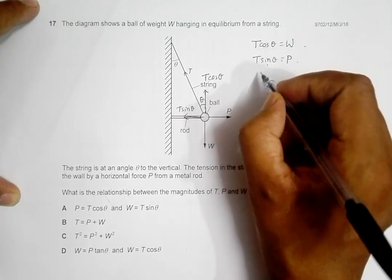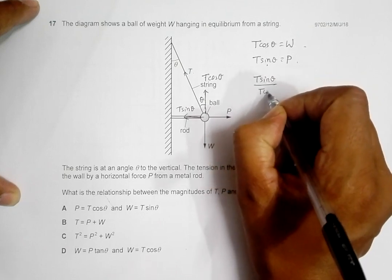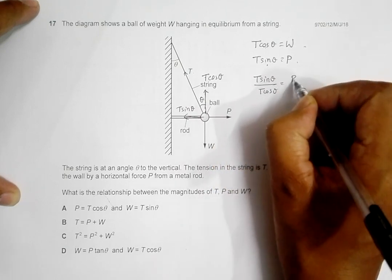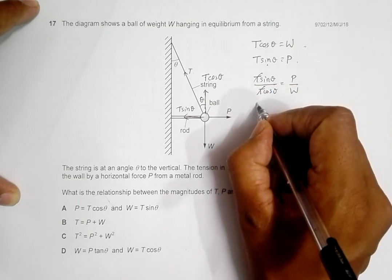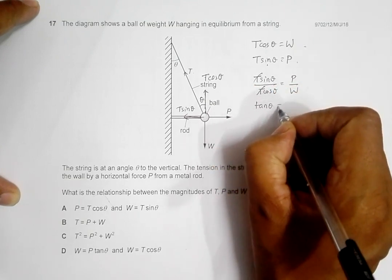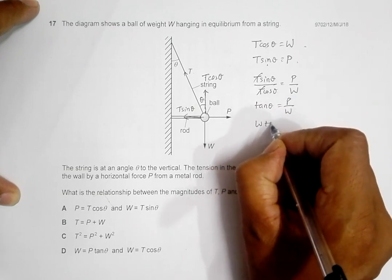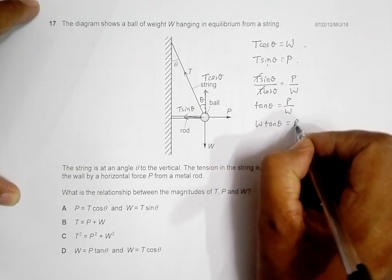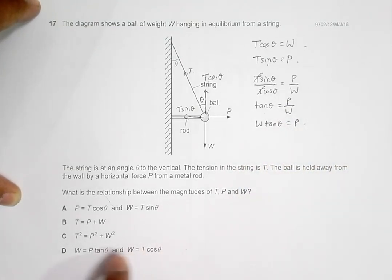If I divide this equation by this, I will have T sin theta by T cos theta equals P by W. So T and T cancel, we have tan theta equals P by W, or I can say W tan theta equals P.